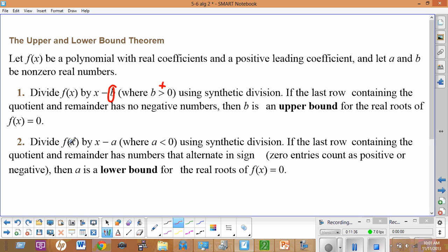Number 2: Divide f(x) by x minus a where a is less than 0. This is the zero we're looking at and he's negative, it has to be negative for this to apply. Using synthetic division, if the last row containing the quotient and remainder has numbers that alternate in sign, and this is important, zero entries count as positive or negative.